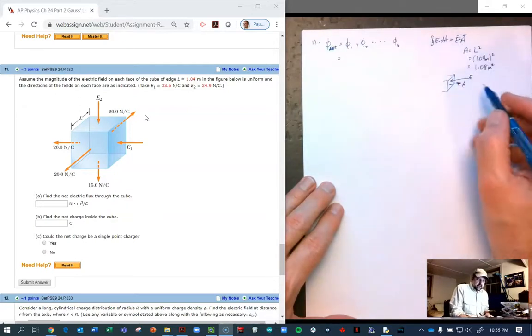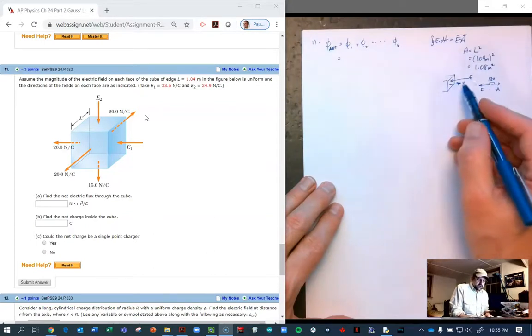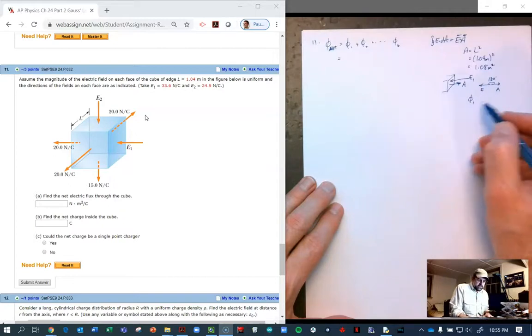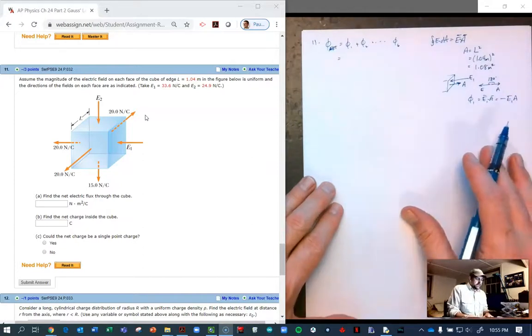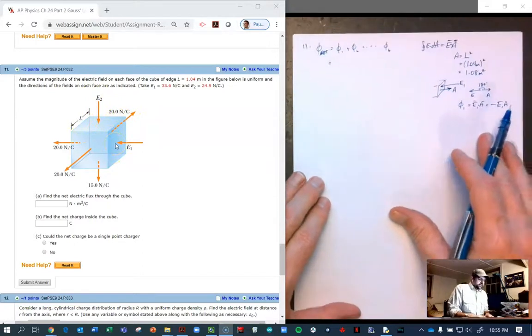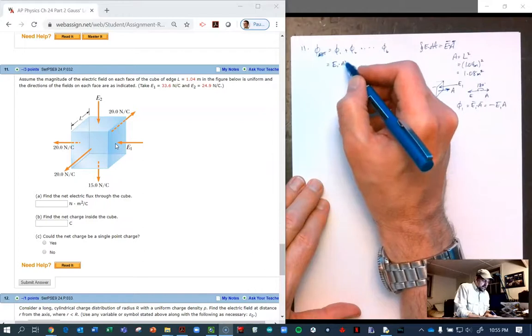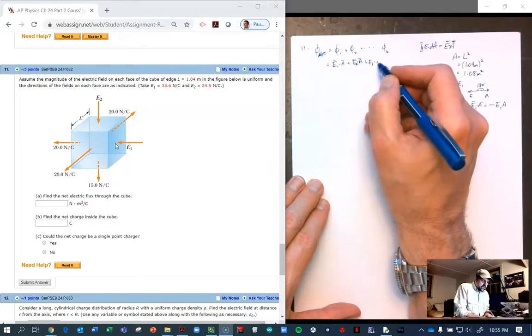So here, this dot product E dot A is going to be minus because the angle between E and A is 180 degrees. And so the dot product E dot A is E A cosine theta, and cosine of 180 is negative. So for E1, the flux one is going to be E1 dotted into A, which is going to be minus E1 A where these are magnitudes now. If we analyze that, the only two negative fluxes are going to be the top flux and this one on the right-hand side. So this is going to be E1 dot A plus E2 dot A plus E3 dot A.